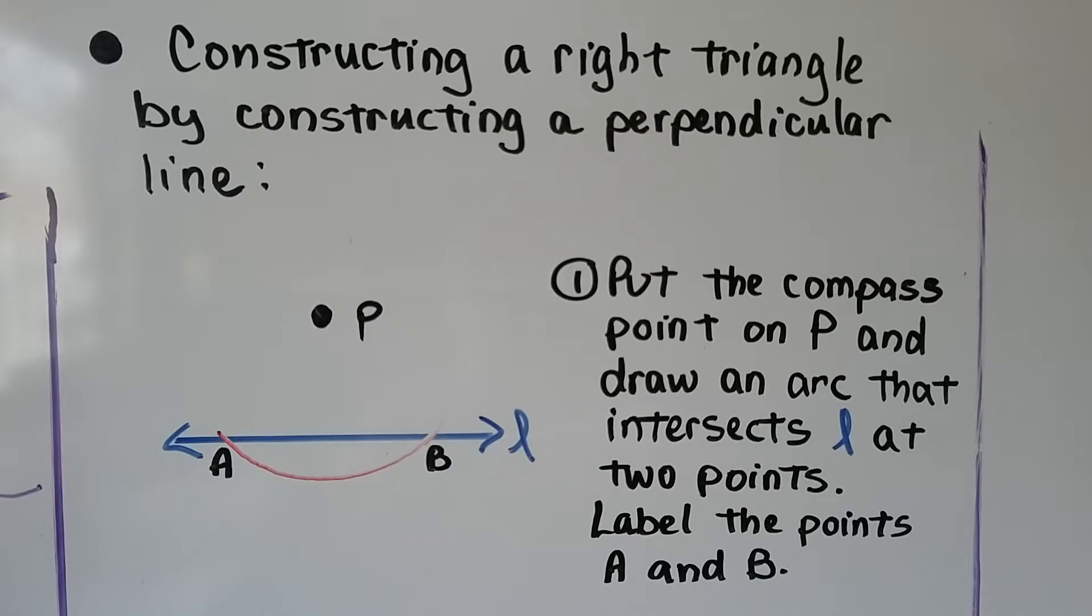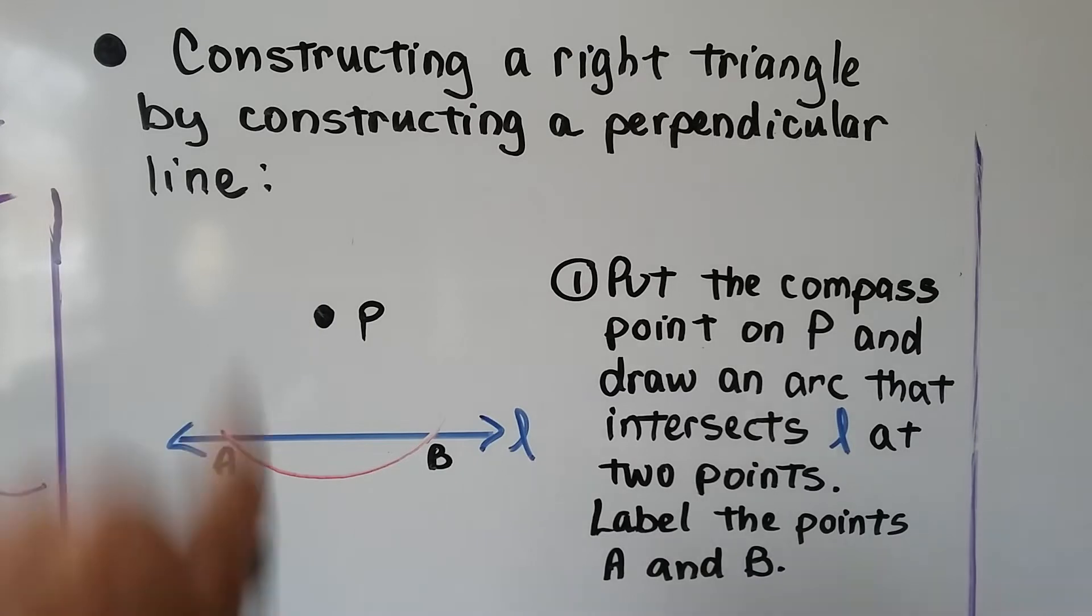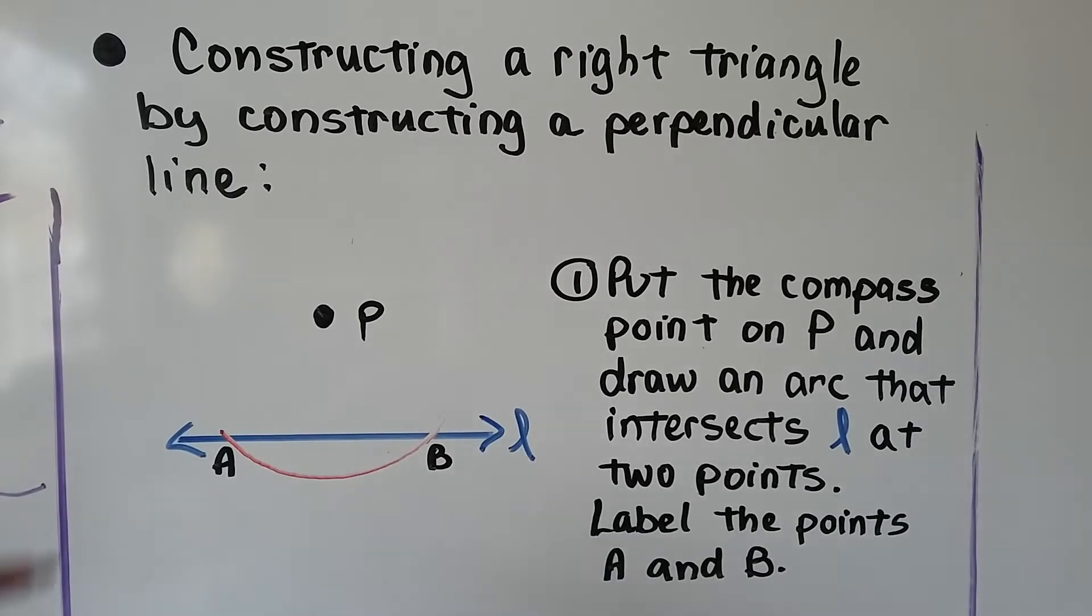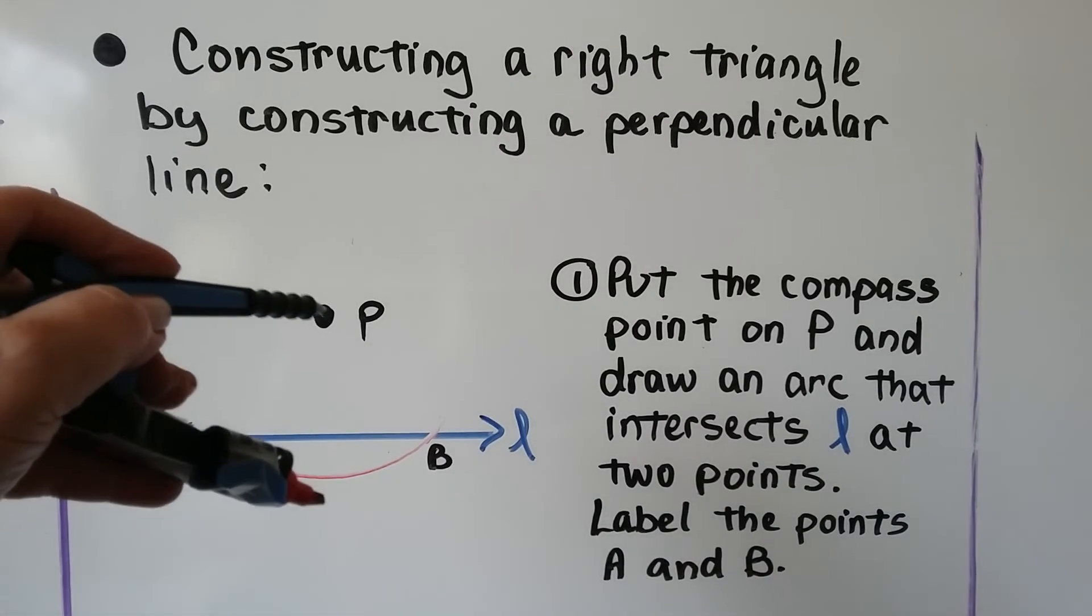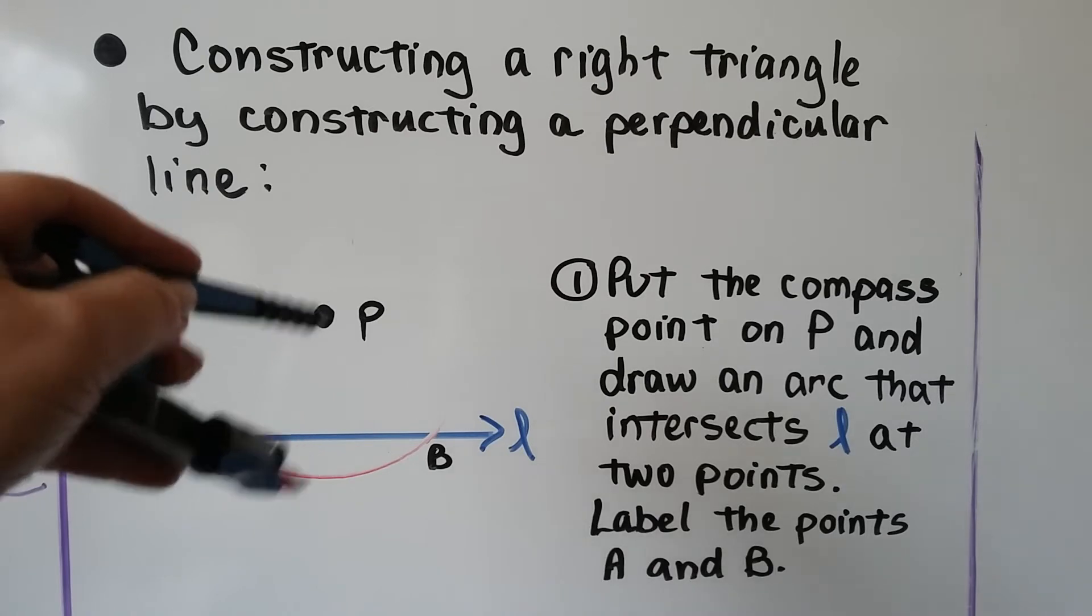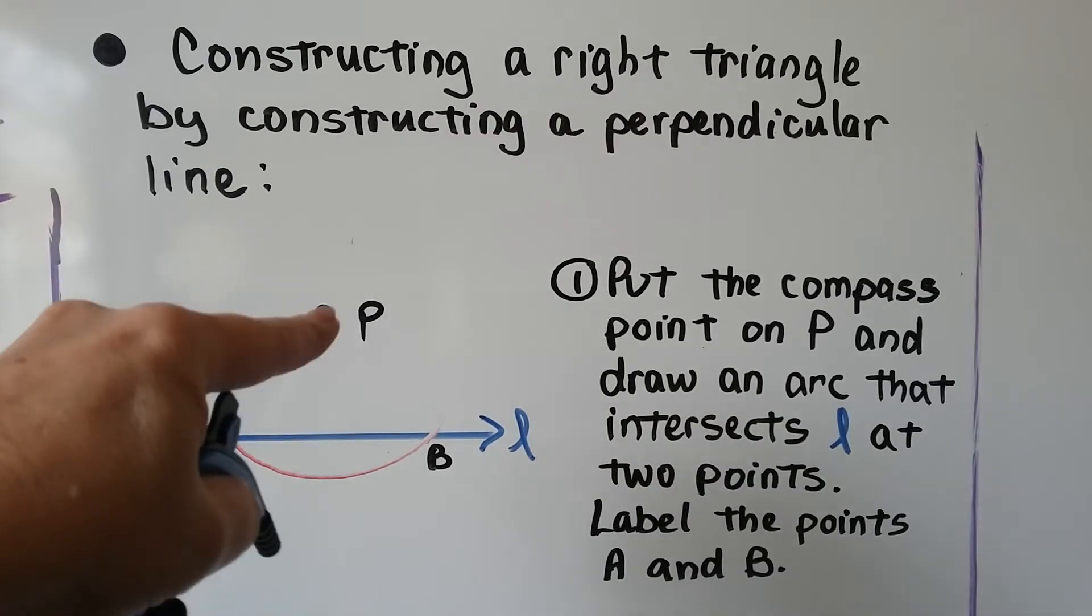Quick review on constructing a perpendicular line. We have line L and point P. Put the compass point on P and make it a little bit longer than the distance from P to the line,